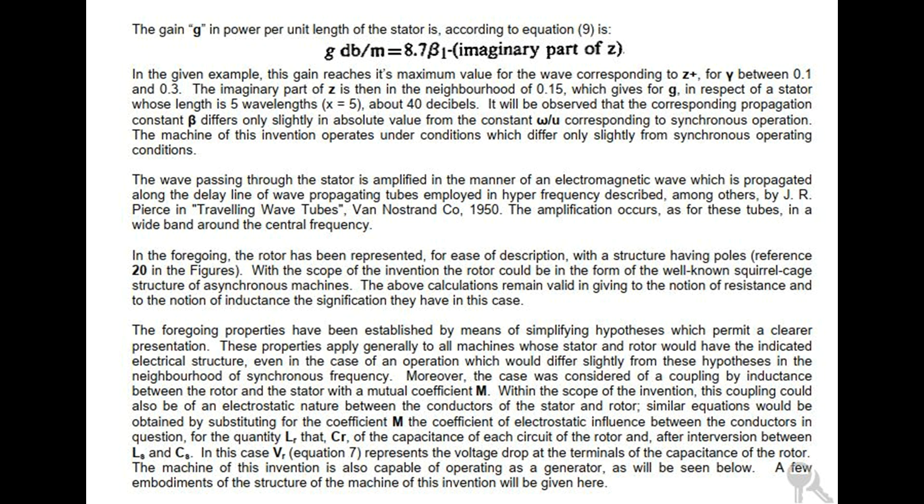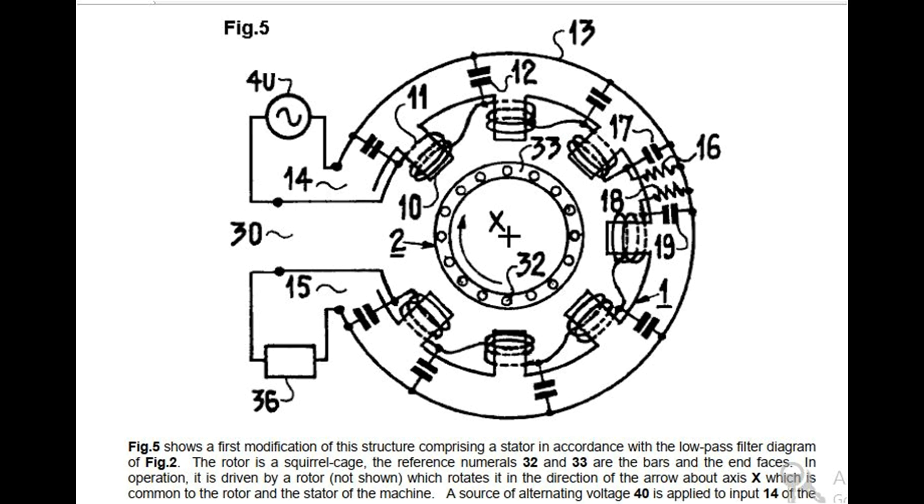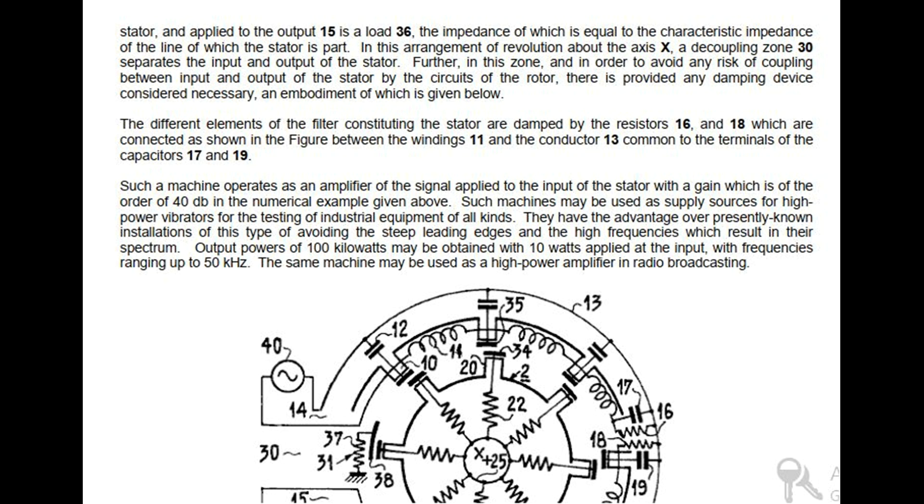A few embodiments of the structure of the machine of this invention will be given here. Fig 5 shows a first modification of this structure comprising a stator in accordance with the low-pass filter diagram of Fig 2. The rotor is a squirrel cage; the reference numerals 32 and 33 are the bars and the end faces. In operation, it is driven by a motor, not shown, which rotates it in the direction of the arrow about axis X which is common to the rotor and the stator of the machine. A source of alternating voltage 40 is applied to input 14 of the stator, and applied to the output 15 is a load 36, the impedance of which is equal to the characteristic impedance of the line of which the stator is part. In this arrangement of revolution about the axis X, a decoupling zone 30 separates the input and output of the stator.